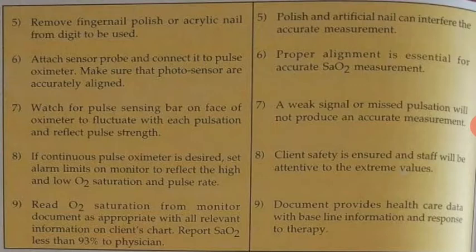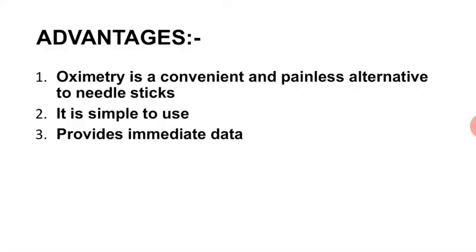Match the pulse sensing bar on the face of the oximeter to fluctuate with each pulsation and reflect pulse strength। If continuous pulse oximetry is desired, set alarm limits on the monitor to reflect high and low O2 saturation and pulse rate। Read O2 saturation from the monitor, document with all relevant information on the client chart, and report if O2 is less than 93 percent to the physician।